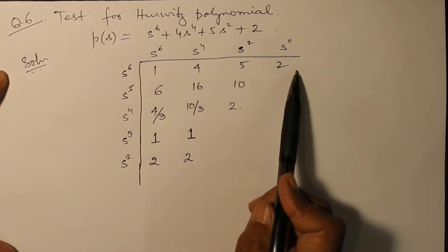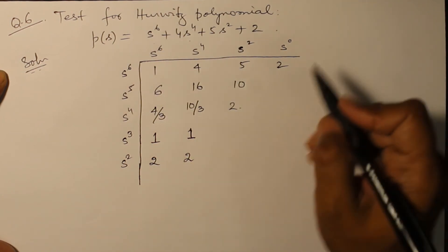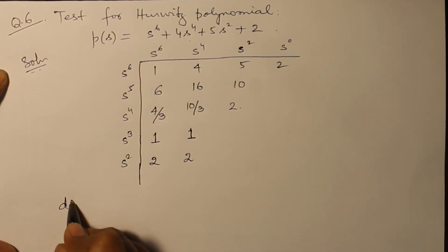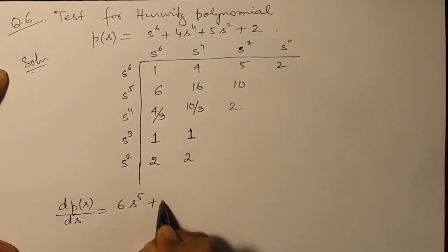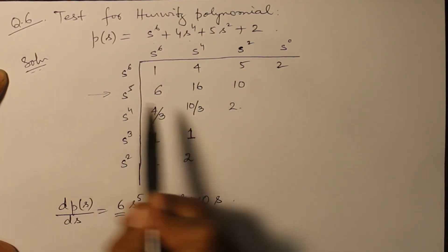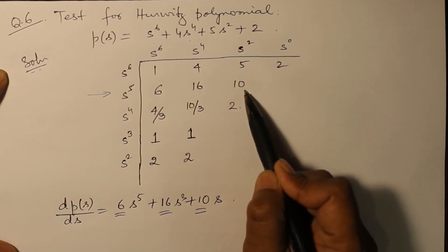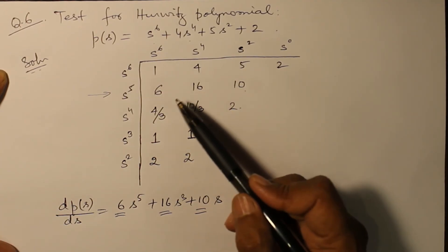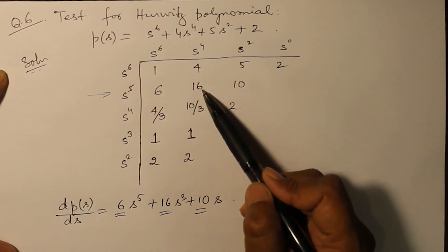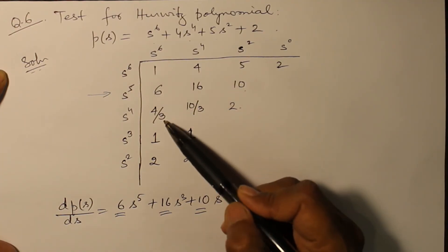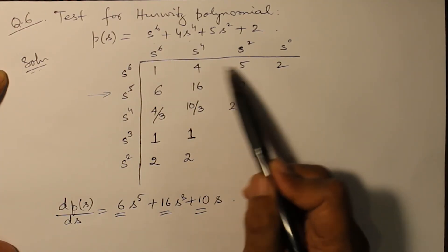Test for Hurwitz polynomial: s^6 plus 4s^4 plus 5s^2 plus 2. So the coefficients 1, 4, 5, and 2 have been written here. And after differentiation of p(s), that is dp(s) over ds, when we found it, came out to be 6s^5 plus 16s^3 plus 10s. So the coefficients 6, 16, and 10 have been used here: 6, 16, and 10.